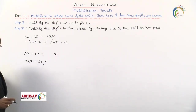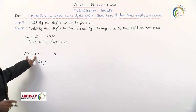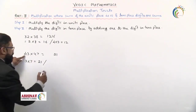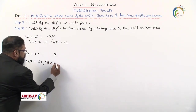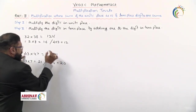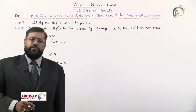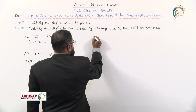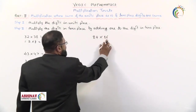Step 2: the tens digit is 4. Increase by 1 to get 5. Then 5 × 4 = 20. Write 20 on the left-hand side. So 43 × 47 = 2021.